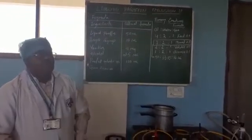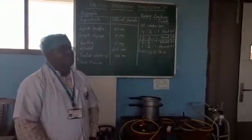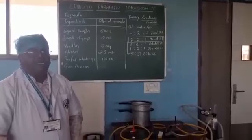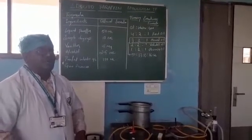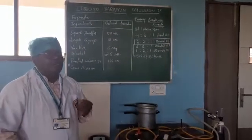There are basically two methods for preparation of emulsions in the laboratory. One method is dry gum method and another method is wet gum method. Out of these two, I am going to show you how the dry gum method is used in the preparation of this emulsion.